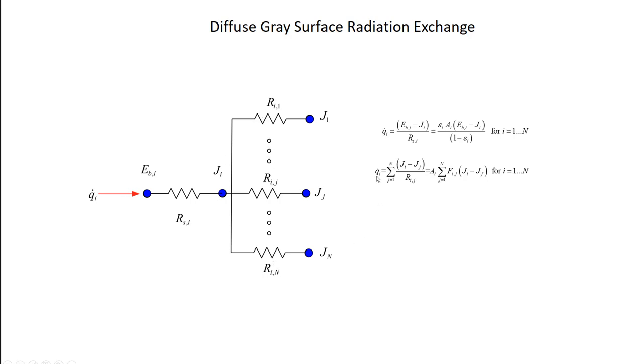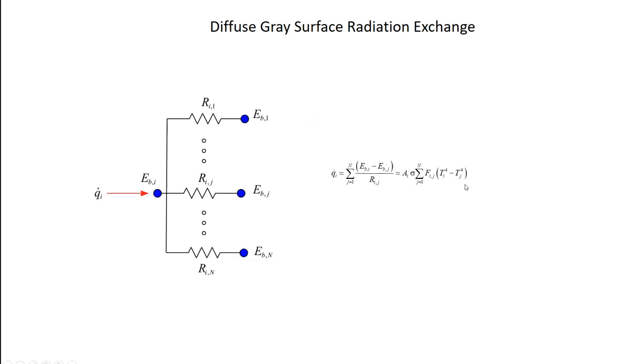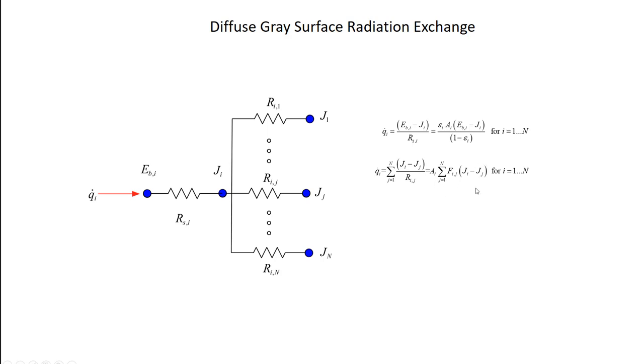And then I get another equation associated with Q dot I being the sum of the heat transfers through all of these resistors. So Q dot I is the sum from J equals 1 to N of the radiosity for surface I minus the radiosity of surface J divided by the resistance between those two surfaces. And if I plug in the definition of Rij, I get this equation here, which looks almost the same as this equation here, except for instead of blackbody emissive powers, here I have radiosities. And again, this is N equations. So here's N equations. Here's N more equations. So I have 2N equations.